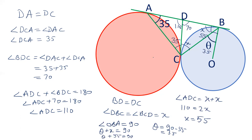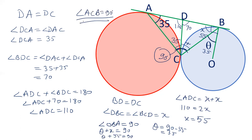Remember friends, whenever a direct common tangent is given and two circles are touching each other at point C, the angle ACB is always 90 degrees. Remember this as a result. If you like this video, please like our videos and subscribe to our channel.